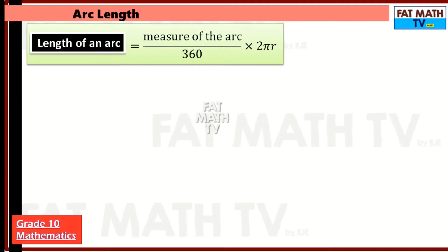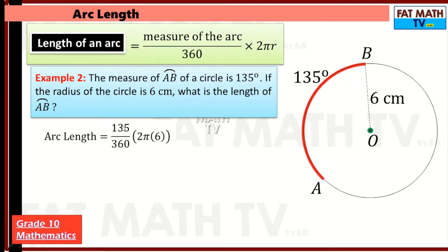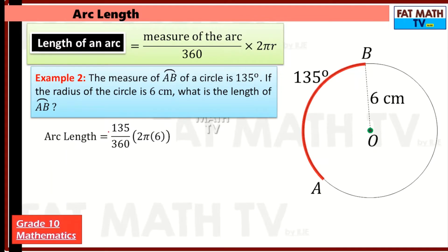Another example: the measure of arc AB of a circle is 135 degrees. If the radius of the circle is 6 centimeters, what is the length of arc AB? We use the same formula — measure of the arc over 360 times 2πr. We can divide by the greatest common factor, 45: 135 divided by 45 is 3, and 360 divided by 45 is 8.